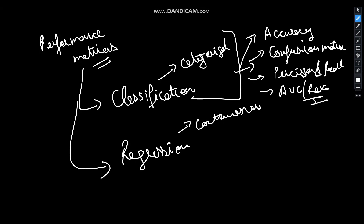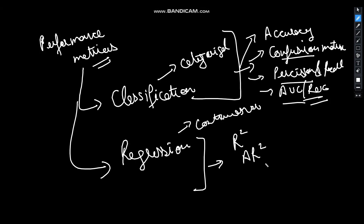In today's lecture, we will have a brief introduction of all of them, and I also have a detailed video on confusion matrix, precision, recall, AUC and ROC. For regression, there are different types of performance metrics: R-squared, Adjusted R-squared, MAE, MSE — mean squared error, mean absolute error, and root mean squared error. Let's discuss them in detail.